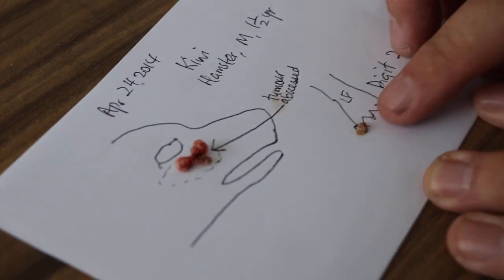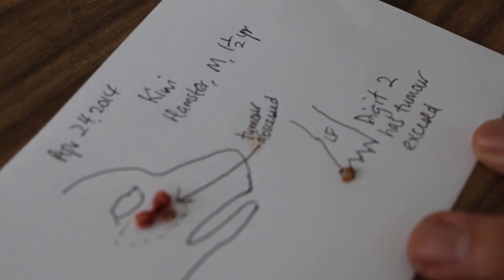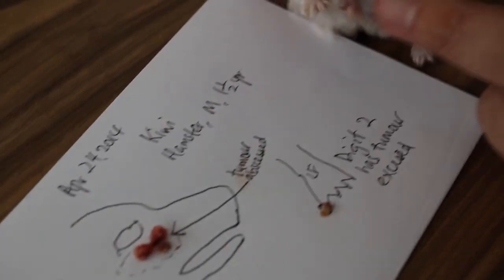They were removed and also here one lump on the toe, called a digit two. This lump has been removed by amputating the toe. Now you can see here the toe is here.